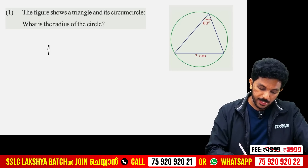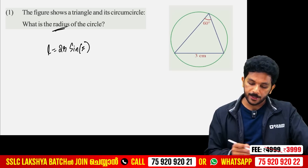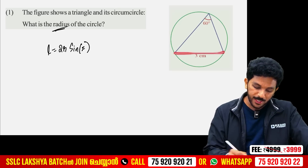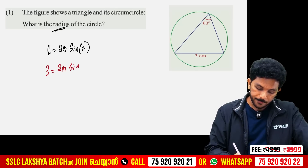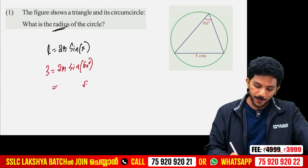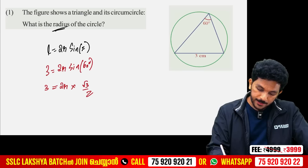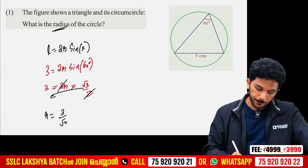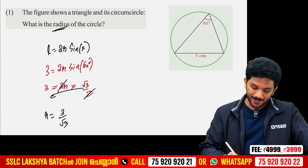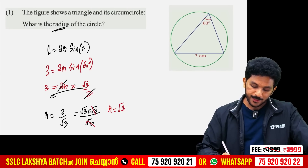This is the formula: l equals 2r·sin(x). This is the radius. l is equal to 3, and the angle is 60 degrees. So 3 equals 2r·sin(60). Since sin(60) equals √3 over 2, we get 2r times √3 over 2 equals √3r equals 3. Dividing both sides by √3, r equals √3 cm.